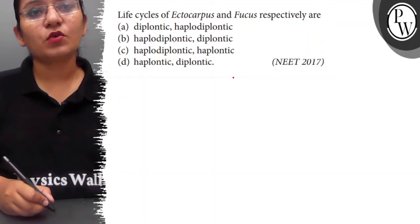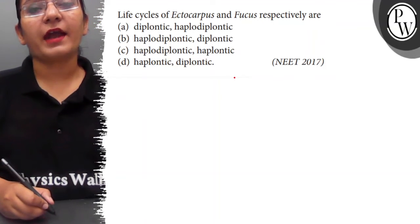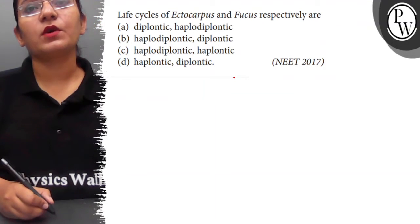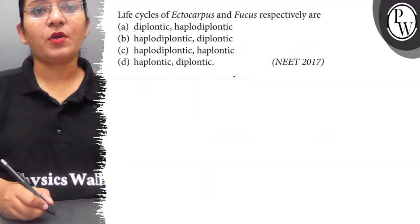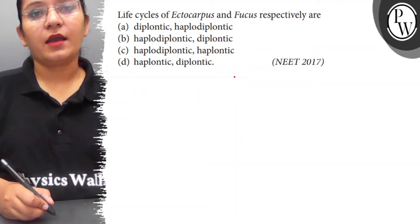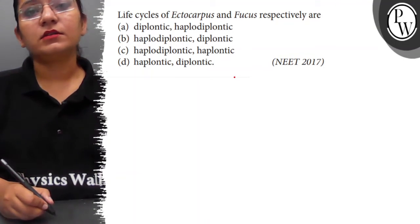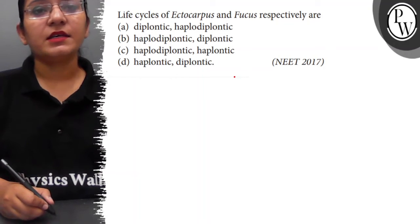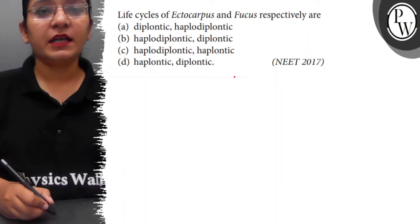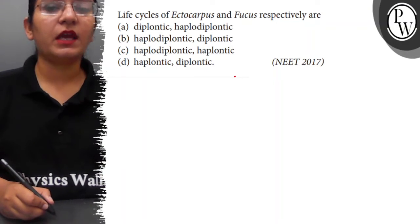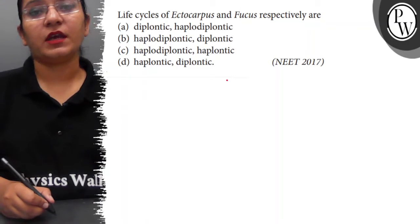Hello students, the question here is: the life cycle of Ectocarpus and Fucus respectively are — A. Diplontic, Haplodiplontic. B. Haplodiplontic, Diplontic. C. Haplodiplontic, Haplontic. D. Haplontic, Diplontic.